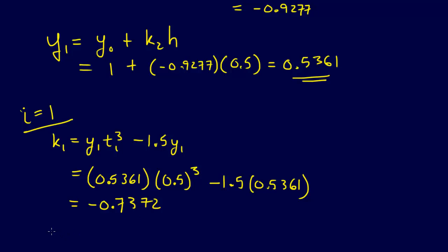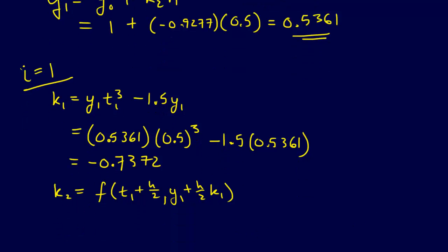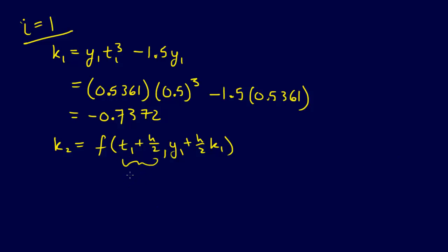And then we have K2 is equal to F of T1 plus H over 2, Y1 plus H over 2 times K1. And before we can do this, we have to figure out what T1 plus H over 2 is. And so that's going to be T1 is 0.5 plus 0.25, so that result is going to be 0.75.